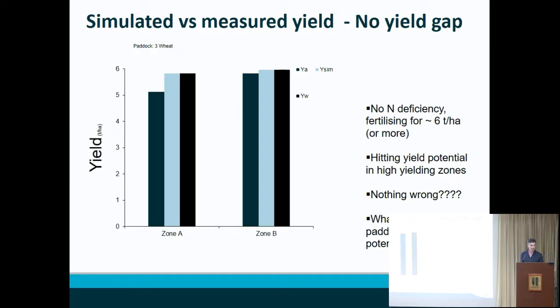If we move to another field, we can see that this was a very high yielding field, achieving six tonnes, with no measurable or discernible yield gap at all. There was no nitrogen deficiency. The farmer was able to achieve six tonnes and was hitting yield potential.